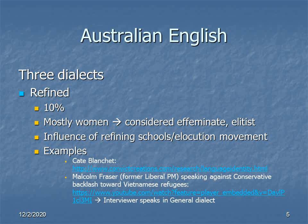As for the examples I've provided, one is Cate Blanchett, and the other is Malcolm Fraser, a former Liberal MP, speaking against the Conservative backlash towards Vietnamese refugees — linking us to the conversation with John Howard in the last slide. The reason I'm including this one is also that the interviewer speaks general Australian, so you can hear during the conversation the difference between the two accents.